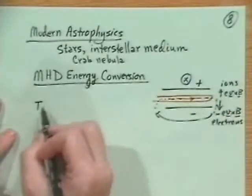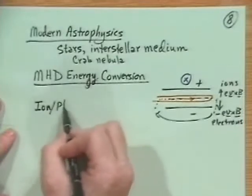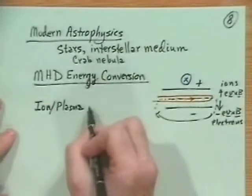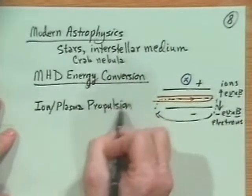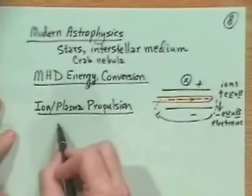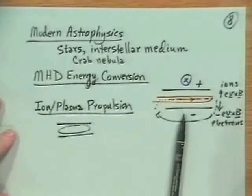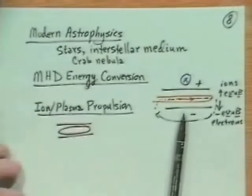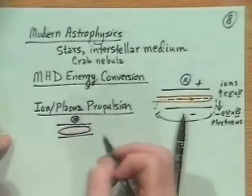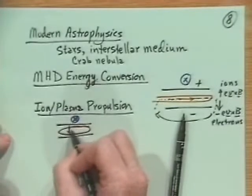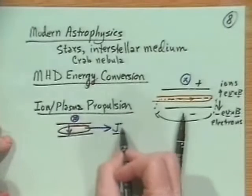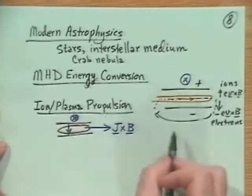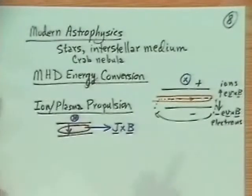The contrary of this is called ion propulsion, or it should be called plasma propulsion. The basic idea is you have two plates with plasma in between. You arrange to have a magnetic field into the board. But this time, you have a generator which causes a current to flow across, and that plasma comes out the back of the device as in a propulsion device. There's a J cross B force on the plasma, which causes the plasma to be lost from the system.